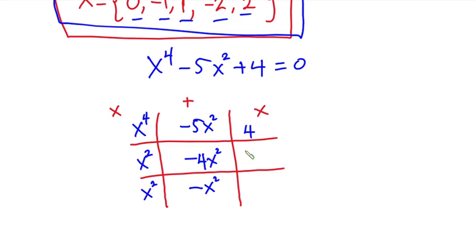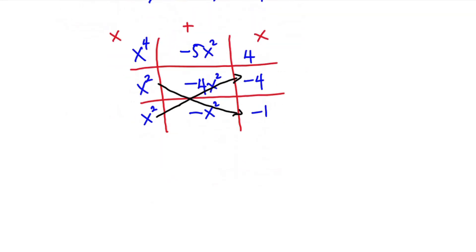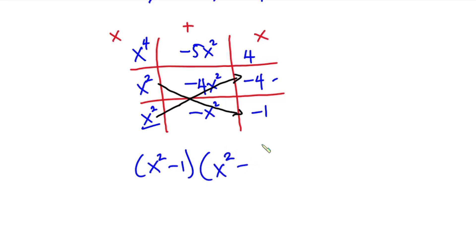From here, all you need to do is draw a diagonal line to reach each end value. This gives you the factors: x squared minus 1 is one factor, and x squared minus 4 is the other factor. So we have (x squared minus 1)(x squared minus 4) equals zero.